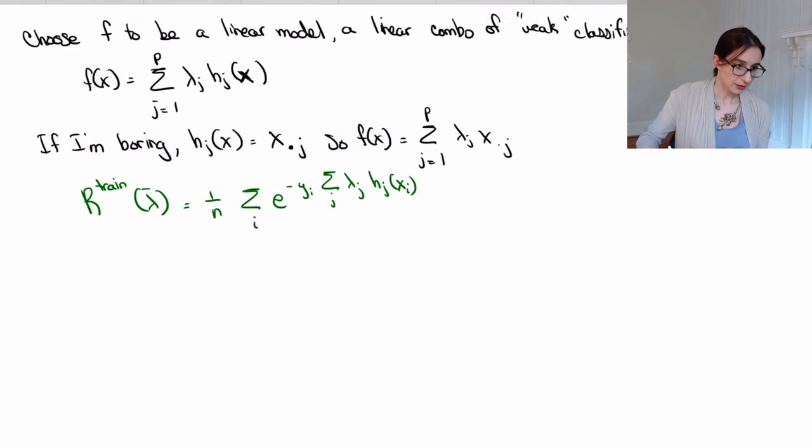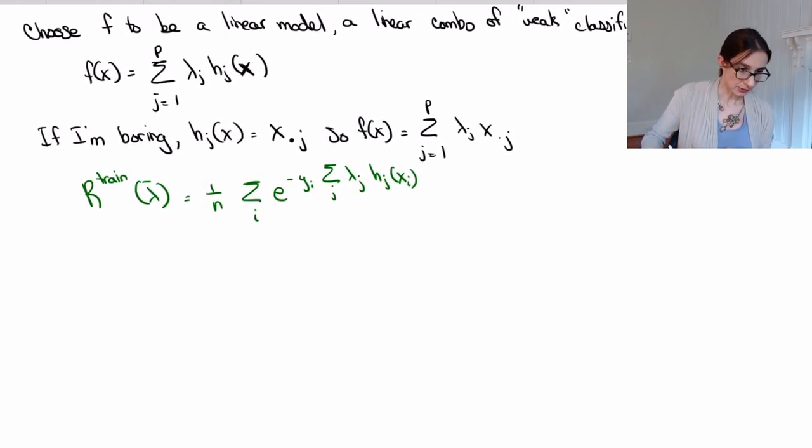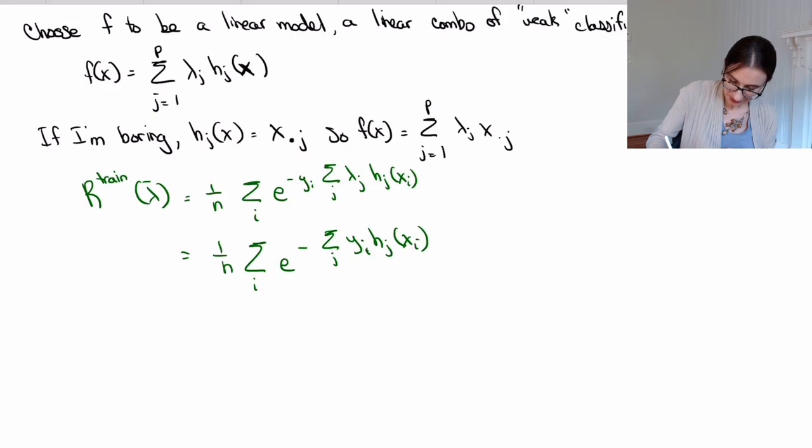Now, this thing I can write as, I'm just going to change around the order in which I put things. So this is e to the negative, sum over j, and then I'm going to put here yi hj of xi. So I can put the margins, so that's the margin there, and then times lambda j. So you can see this, this is the margin here for weak classifier j on data point i.